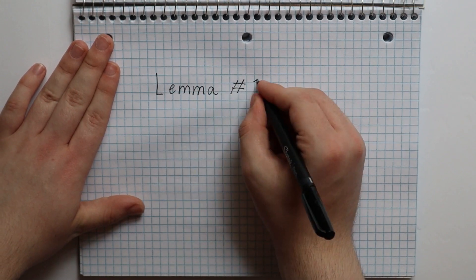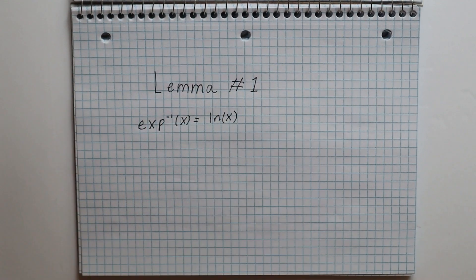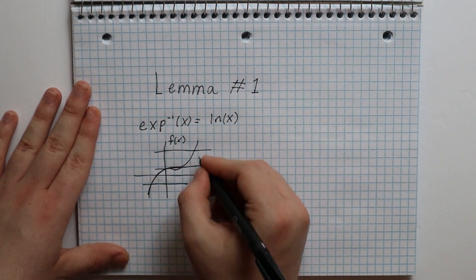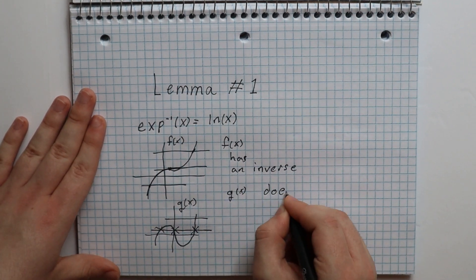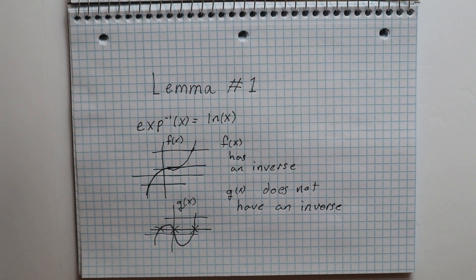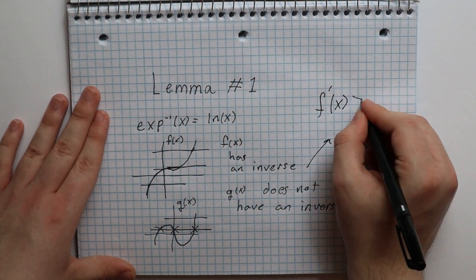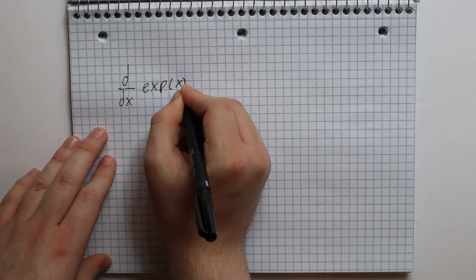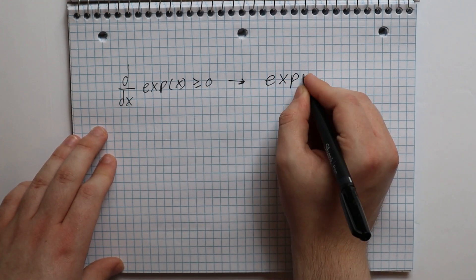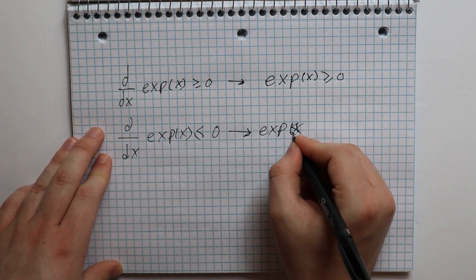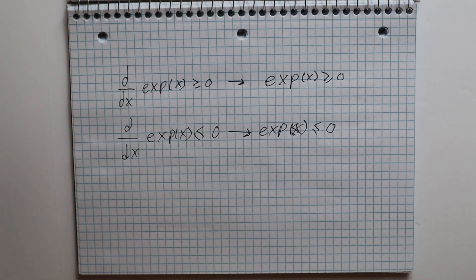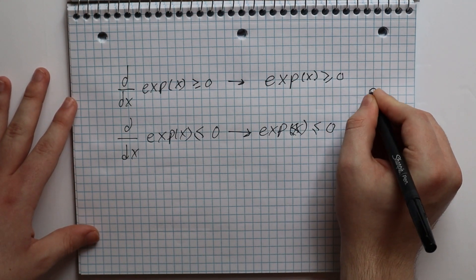For our first lemma, we will prove that exponential of x has an inverse. To say that a function has an inverse is to say that the function passes the horizontal line test: if you draw a horizontal line anywhere on the plot of the function, it should only pass through one point. One way to test this is to see if the function is strictly increasing or decreasing. For exponential of x, this means the derivative of exponential of x is always greater than or equal to 0, or always less than or equal to 0. Because of our definition, this instead can be written as exponential of x is always greater than 0, or always less than 0.